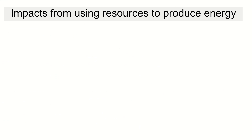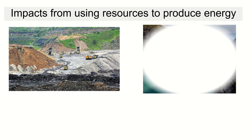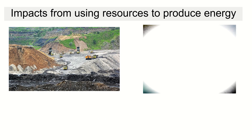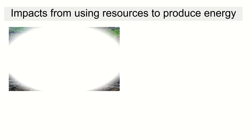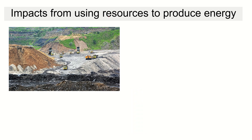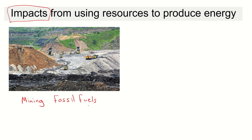So let's look at some impacts from using energy resources to produce electricity. When we produce electricity, a few things may happen. We are looking at what it does to the environment around us. In this picture, we can see that they are mining to remove fossil fuels, which is coal. Any mining of fossil fuels will cause damage to the environment.